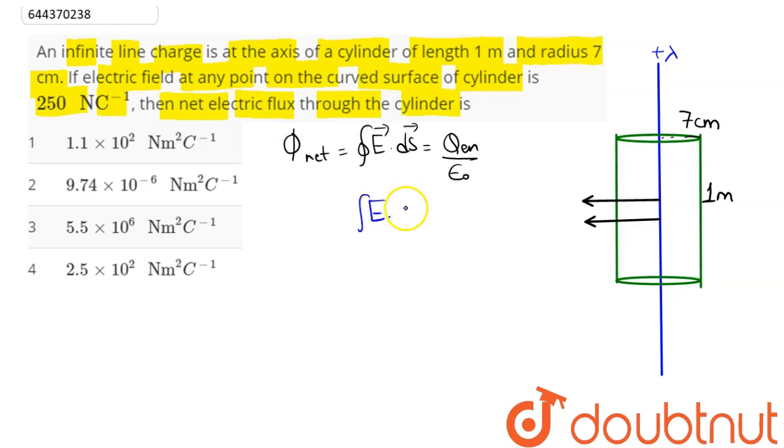E and ds make an angle of 0 degree. Hence, this becomes E into ds into cos of 0 degree, which is our net flux. This comes out to be our electric field as 2k lambda by r into ds.